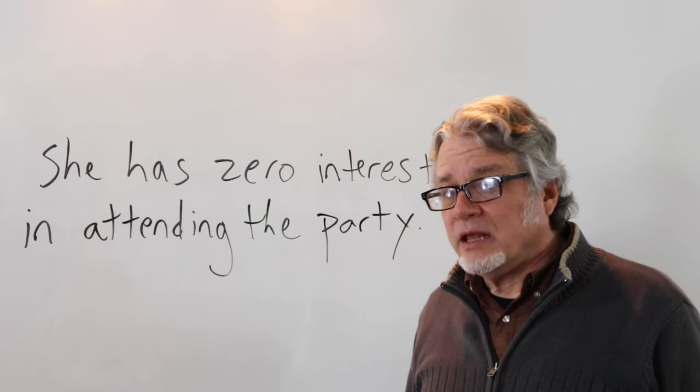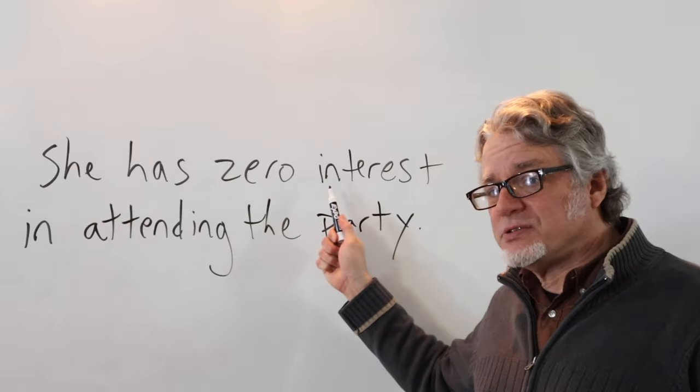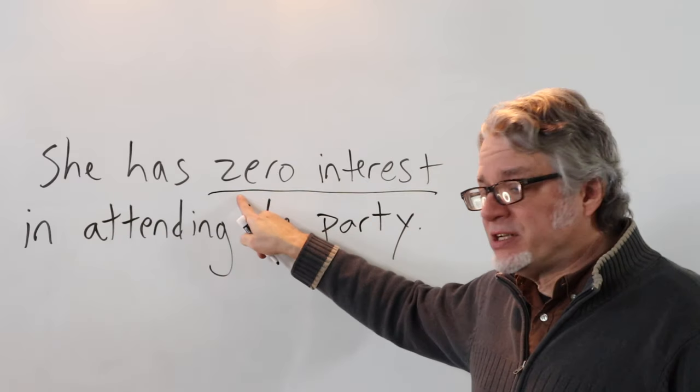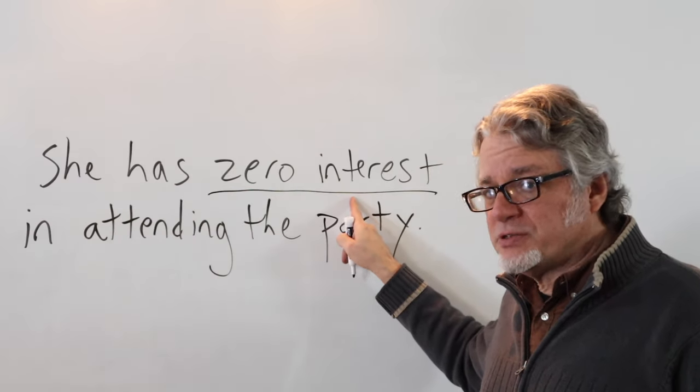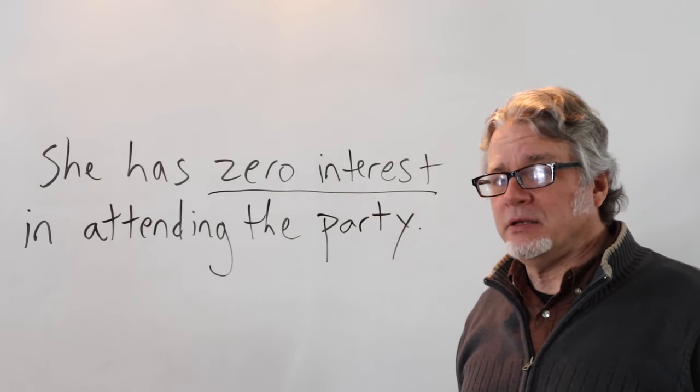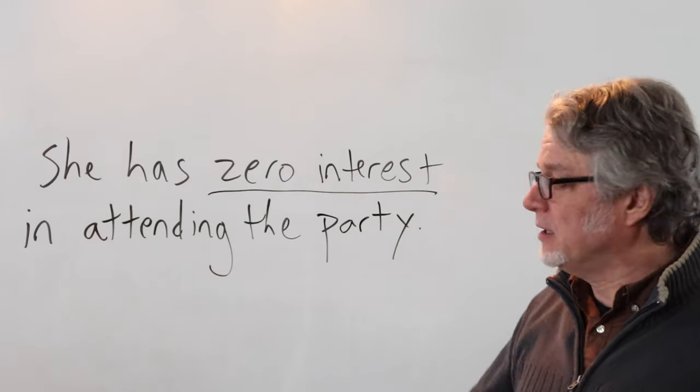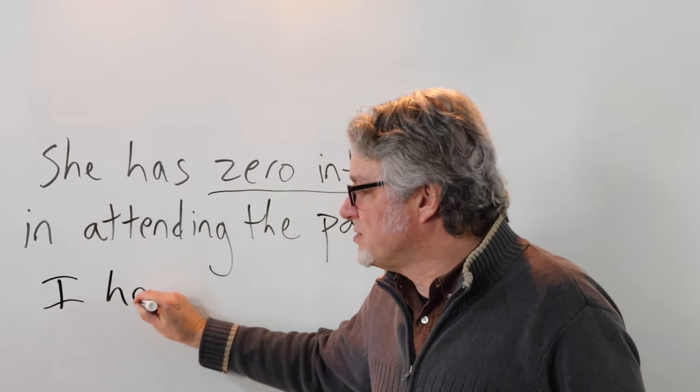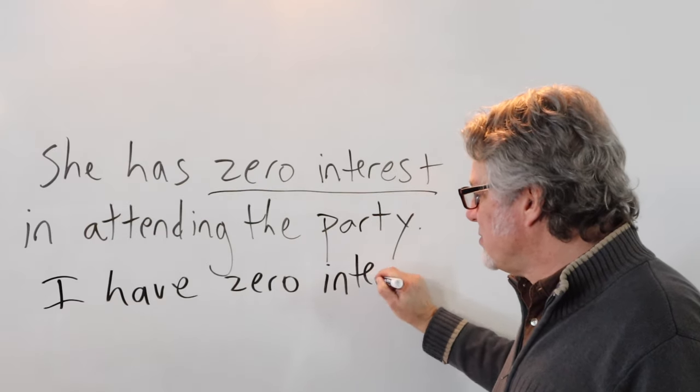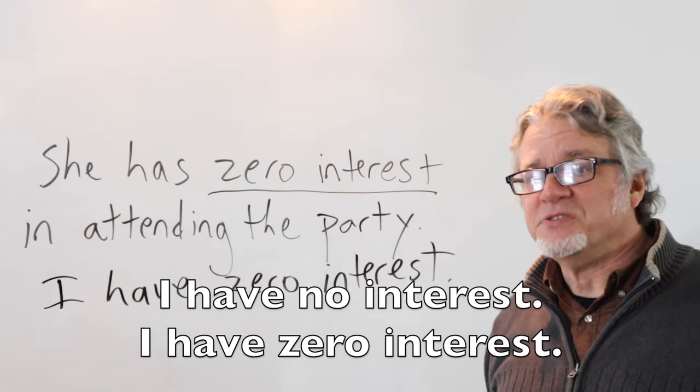Zero can be used as an adjective. In this example, zero interest. This means there's no interest. This is used as an adjective for the noun interest. She has zero interest in attending the party. If you're talking about yourself and your level of interest about something, then you can say something like this: I have zero interest. I have no interest. I have zero interest.